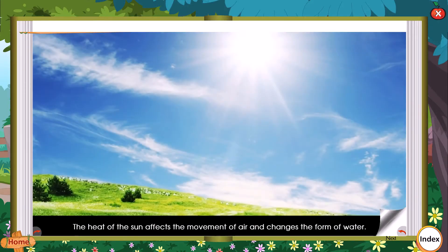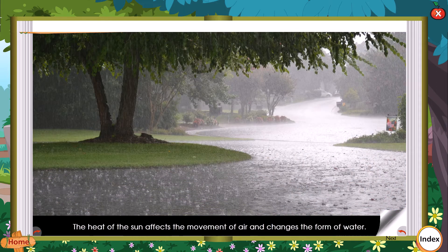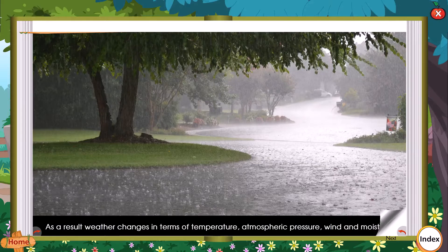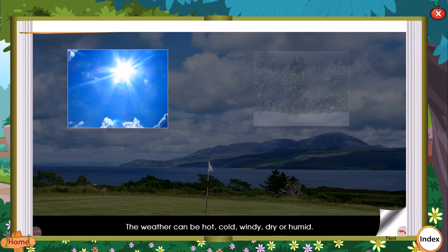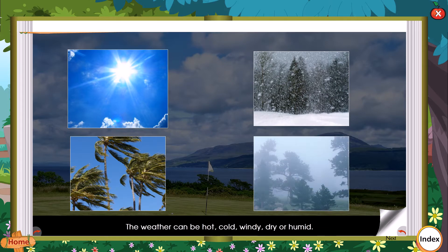The heat of the sun affects the movement of air and changes the form of water. As a result, weather changes in terms of temperature, atmospheric pressure, wind and moisture. The weather can be hot, cold, windy, dry or humid.